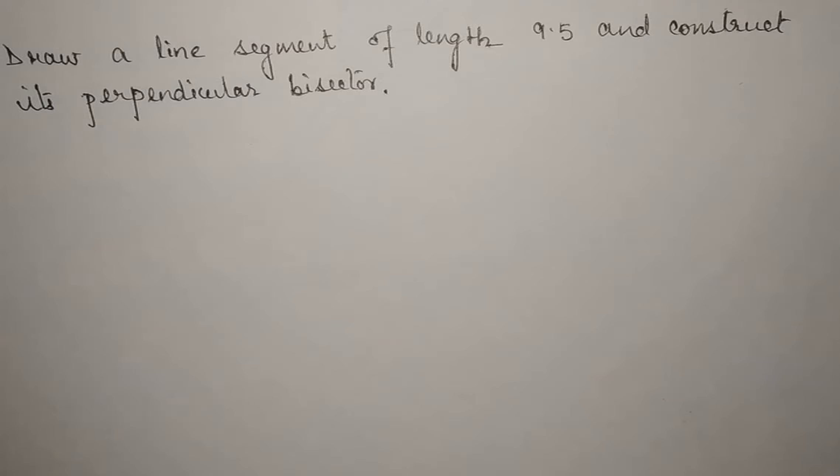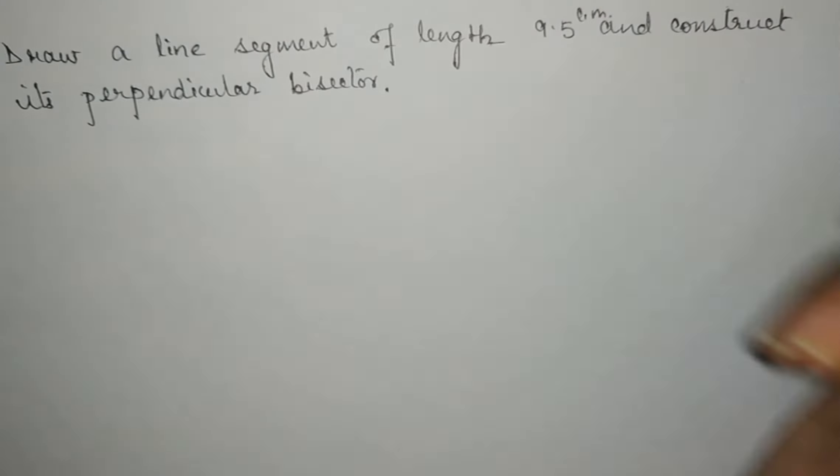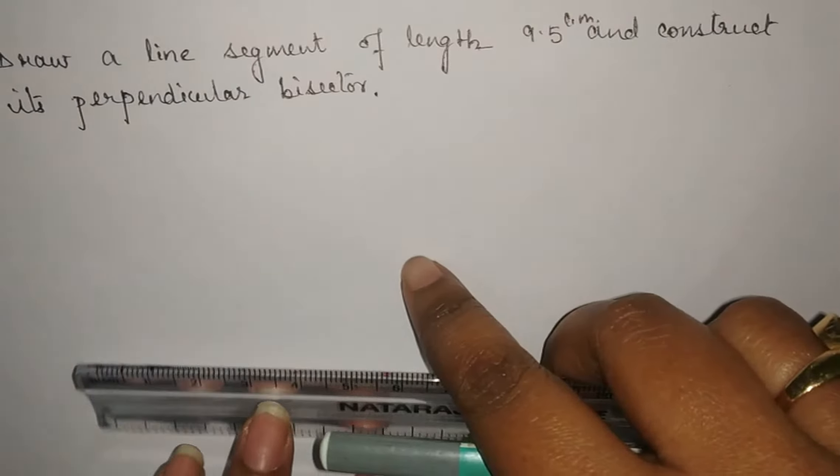Hello everyone, now we are going to start question number 2 of exercise 14.1. In this question we have to draw a line segment of length 9.5 centimeter and construct its perpendicular bisector.